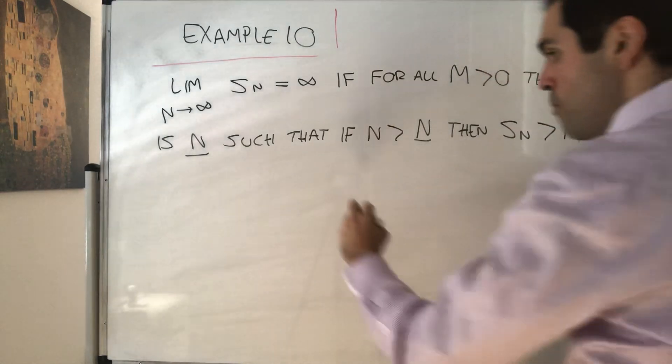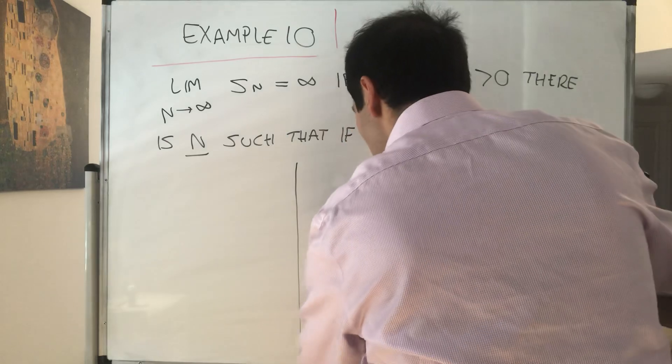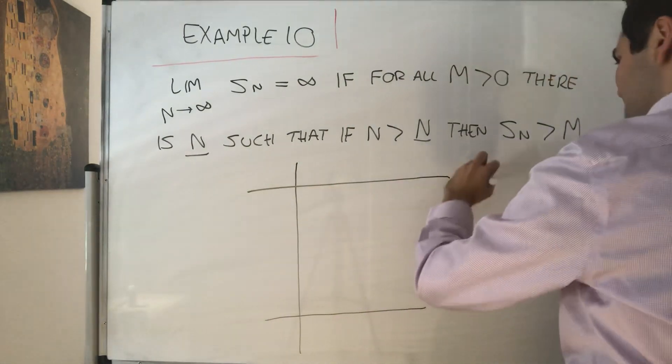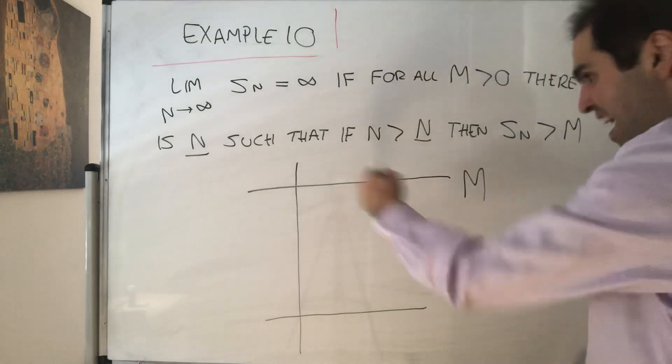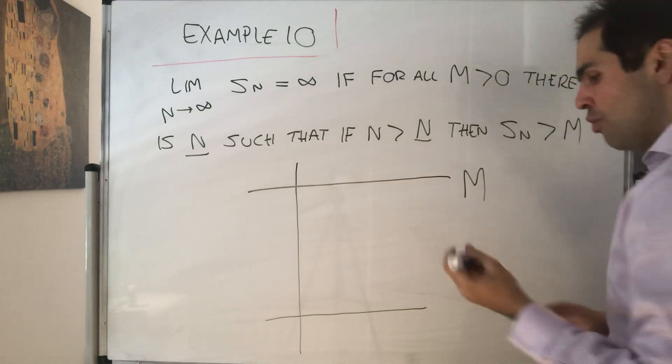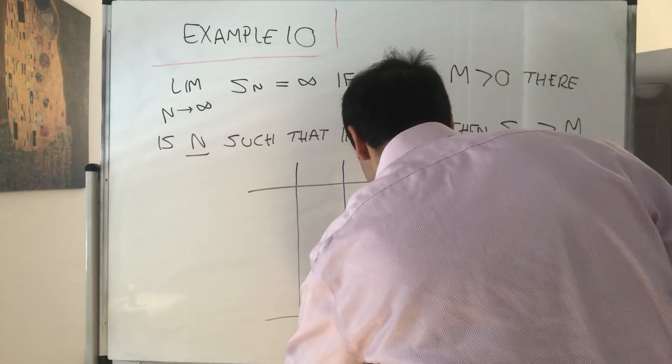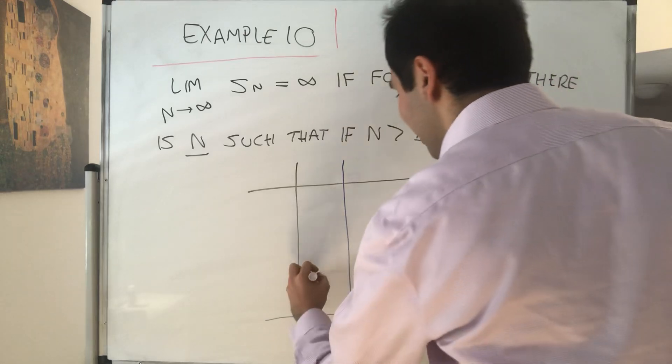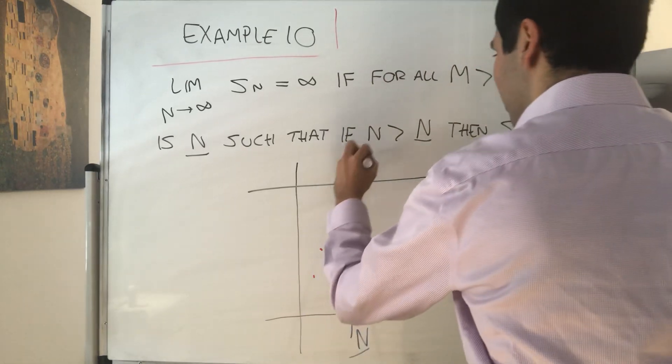So in other words, no matter how big of a number I give you, let's say a gajillion or something, eventually the sequence goes above that number. So there is some threshold such that after that threshold, the sequence goes above this.